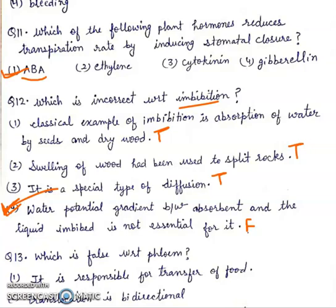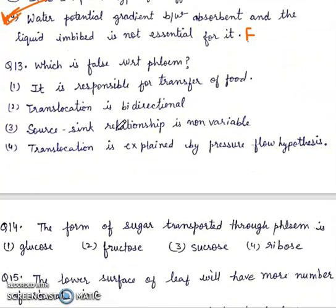Question 13: Which is false with respect to phloem? First, it is responsible for transfer of food. Second, translocation is bidirectional. Third, source-sink relationship is non-variable. Fourth, translocation is explained by pressure flow hypothesis. First statement is true. Second is also true. Third is false. Fourth is true. So, right answer will be third.